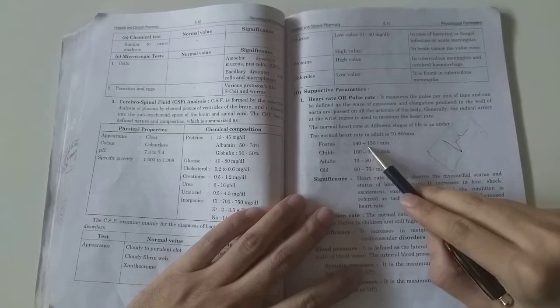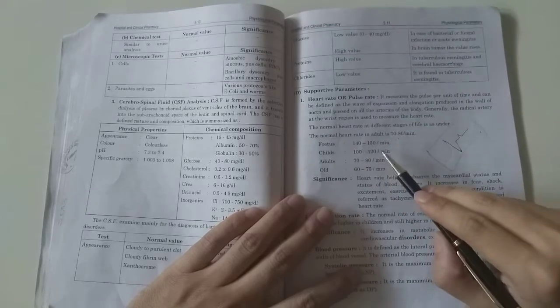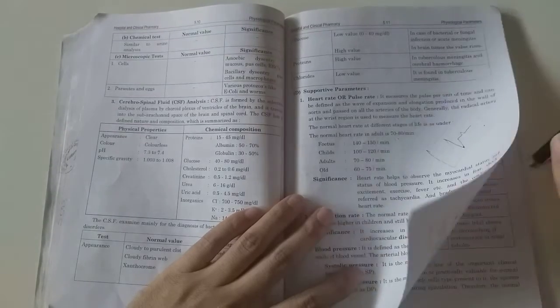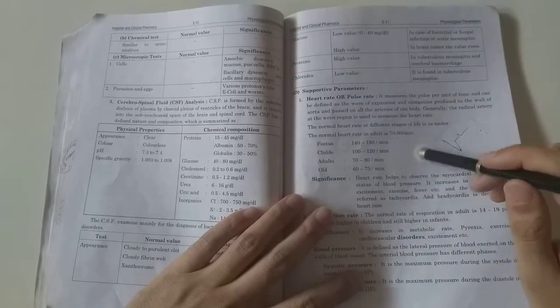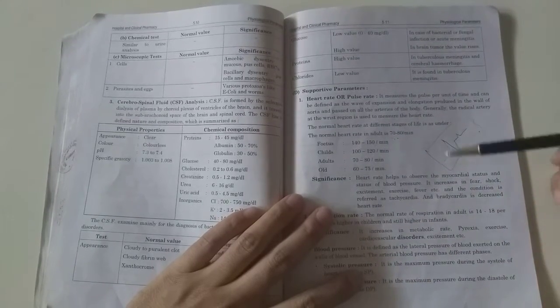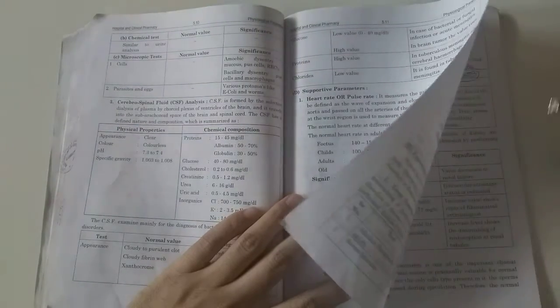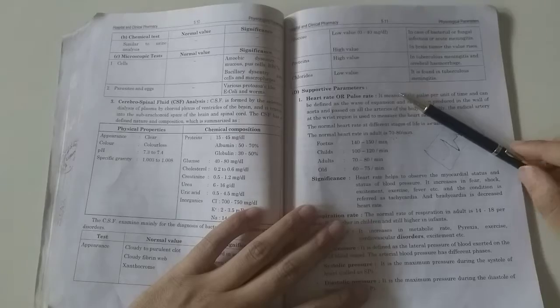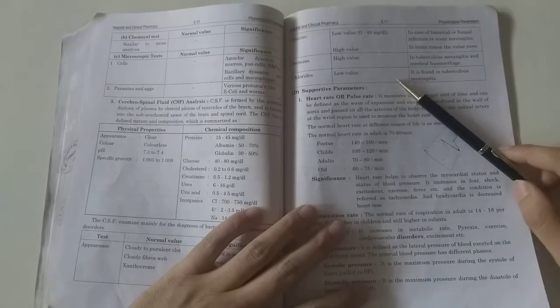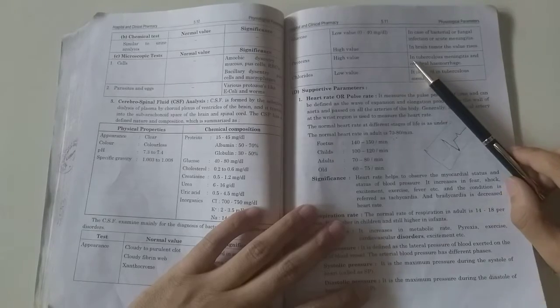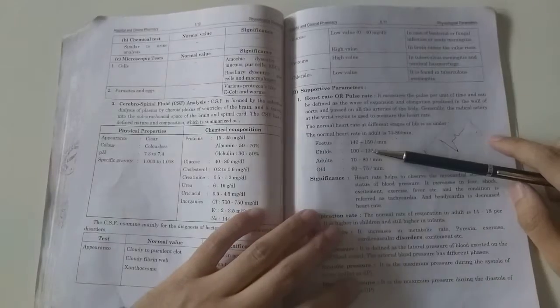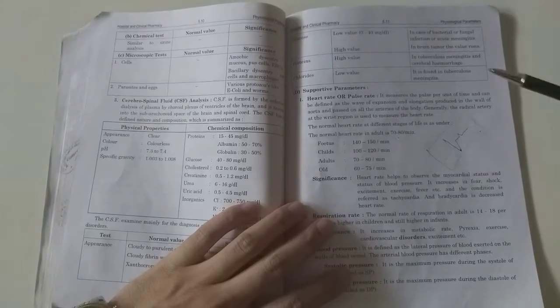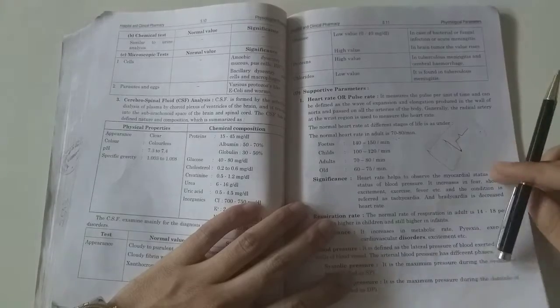Normal heart rate: in fetus it is 140 to 150 per minute, in newborn it is 130 to 150 per minute, in children it is 80 to 120 per minute, in adults it is 70 to 80 per minute, and in old age it is 60 to 75 per minute. Many factors can change heart rate. Exercise, blood pressure problems, fear, or severe medical conditions like tachycardia and bradycardia can affect heart rate.